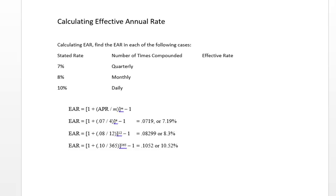As you can see in front of you, we have the stated rate, we have the number of times compounded, and what we're looking for is the effective rate. It's a relatively simple equation, so the EAR equals 1 plus the APR divided by M, times to the Mth power, minus 1.